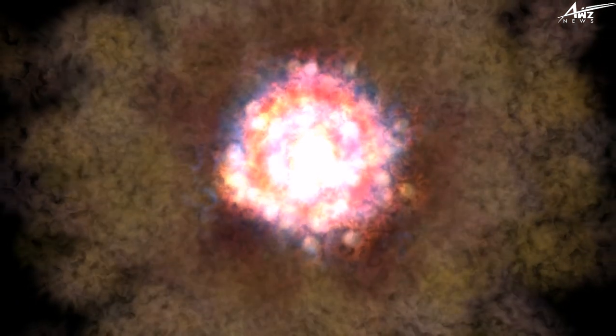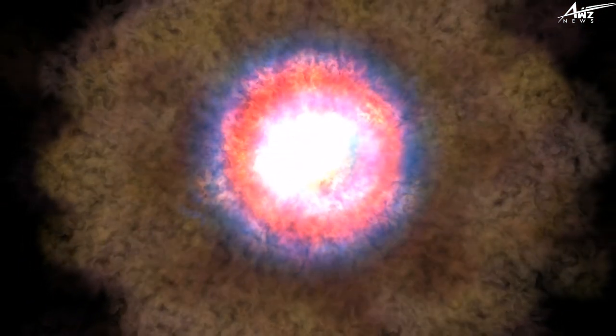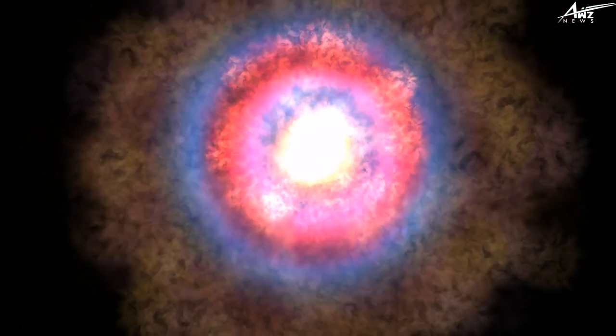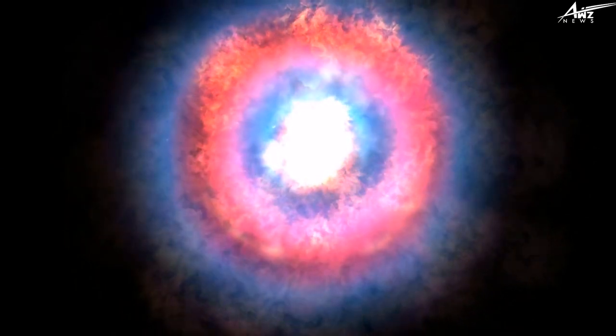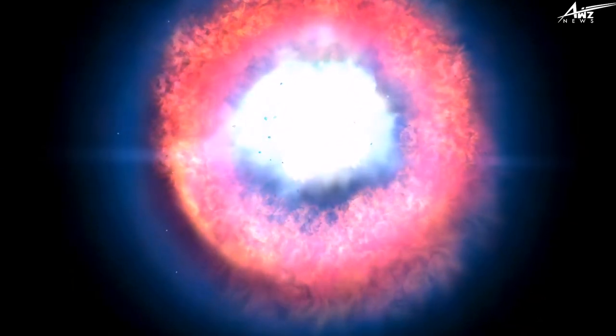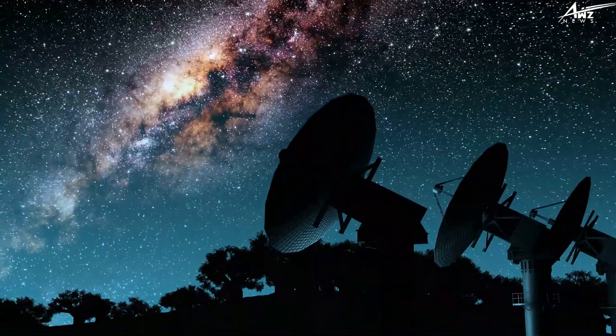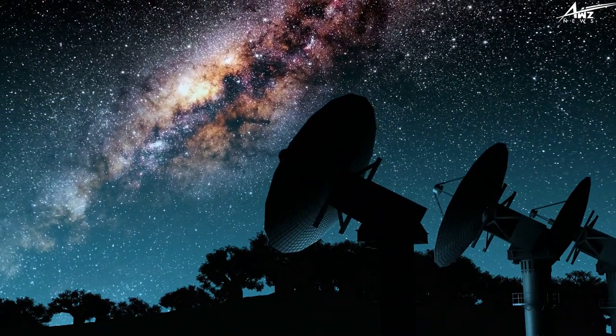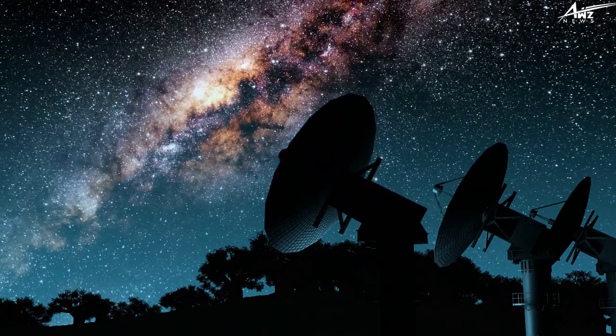The earliest supernova known is over 2,000 years old. Chinese astronomers picked up on a bright light in the sky around 185 A.D. These early astronomers recorded their findings in the Book of Later Han, noting that it shone like a star, seemed to be half the size of a bamboo mat, and did not move through the sky like a comet.